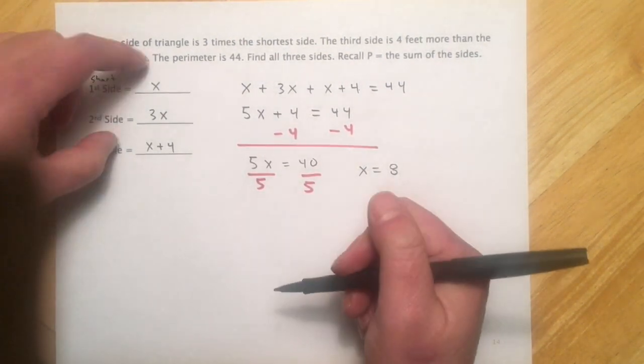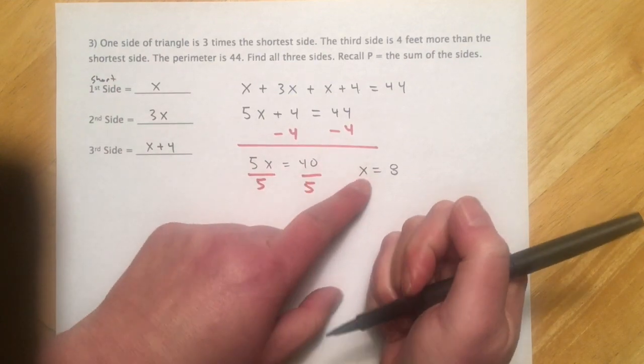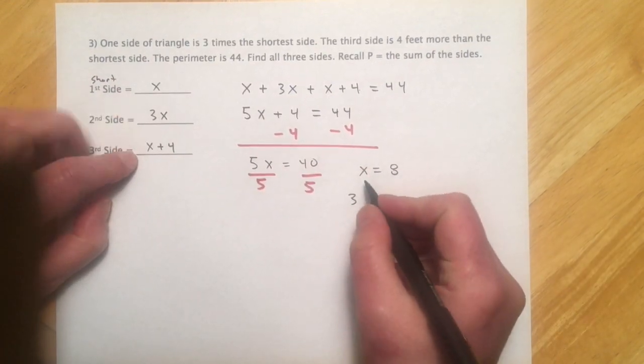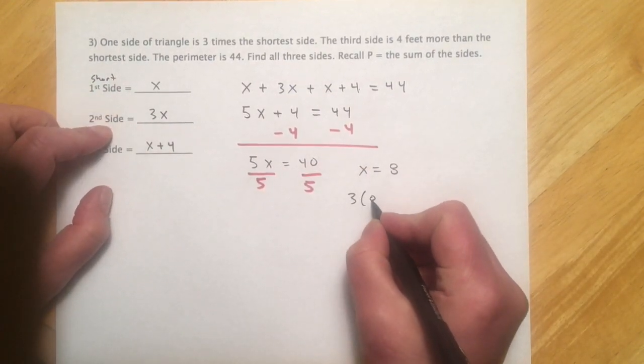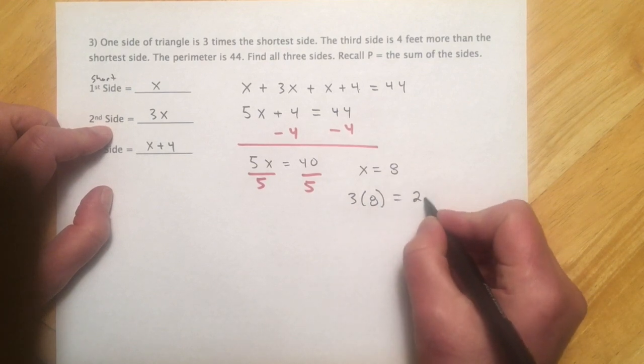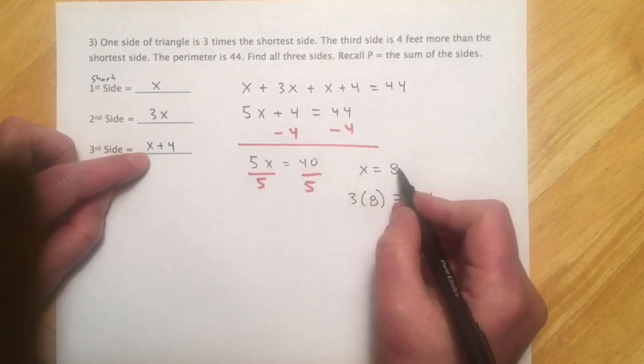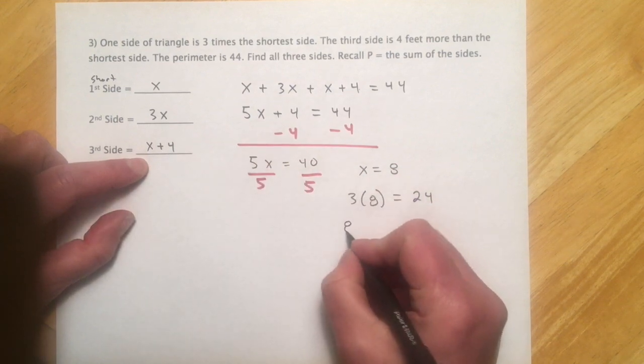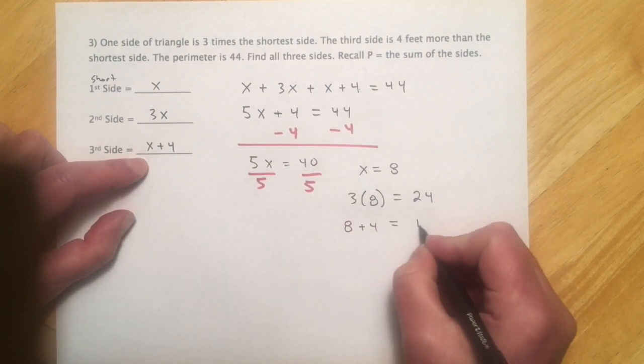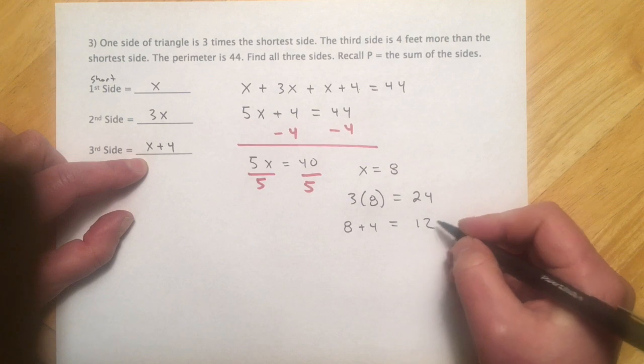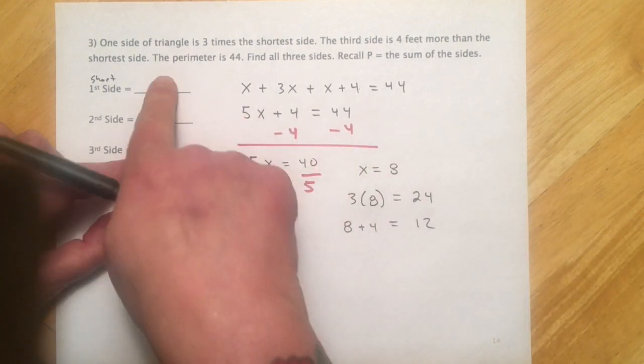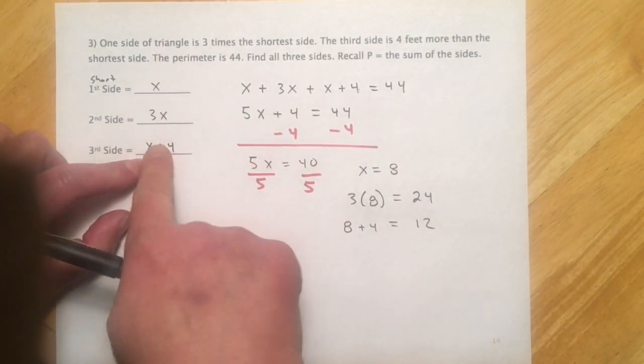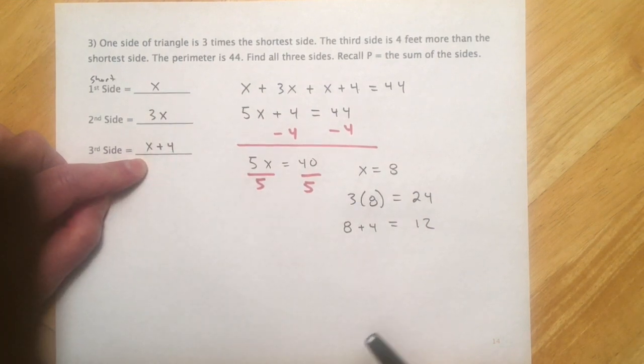So the other thing I like about making this list is now when I get back to the spot, it's really easy to go, okay, so then that makes my second side 3 times 8. Second side is 24. And then my third side would be 8 plus 4 equals 12. So 8, 24, and 12 are my three sides. It gives me a nice easy spot to go back and figure out what I still need to find.